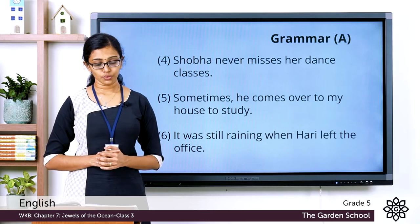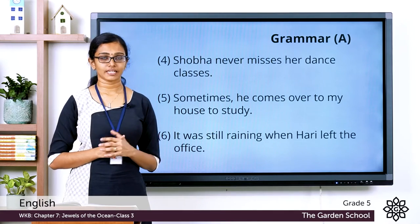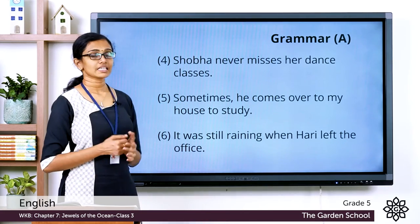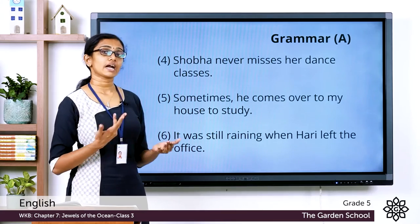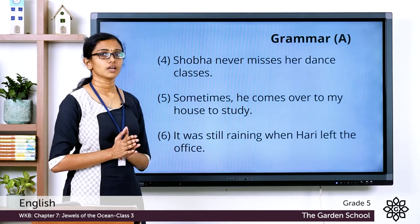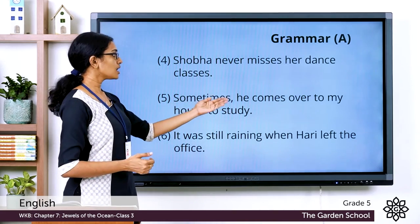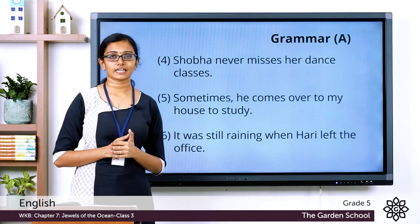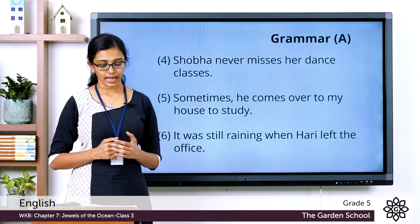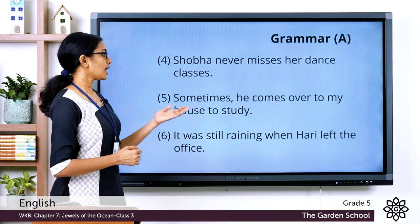The fifth sentence: 'He comes over to my house to study' with the adverb 'sometimes' — rewritten as 'Sometimes, he comes over to my house to study.' Here the adverb 'sometimes', an adverb of frequency, is placed at the beginning as an introductory adverb, and you always follow an introductory adverb with a comma. The sixth sentence: 'It was raining when Harry left the office' with 'still' — rewritten as 'It was still raining when Harry left the office.'